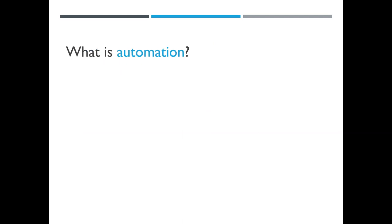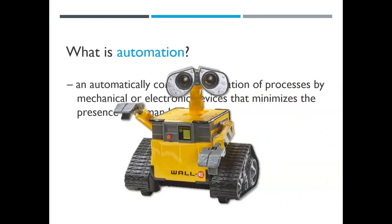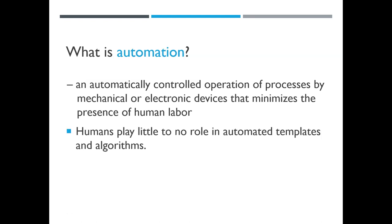First, let's talk about automation. An automated process is controlled by a mechanical or electronic device that minimizes the presence of human labor. So robots, for example — these are automated machines that work without us. We do need to start them, fix them, and keep them going, but once they start running, we don't really need people involved. For example, when we start an algorithm on a computer, it will run by itself until we tell it to shut down, or until an instruction in the algorithm says to stop.